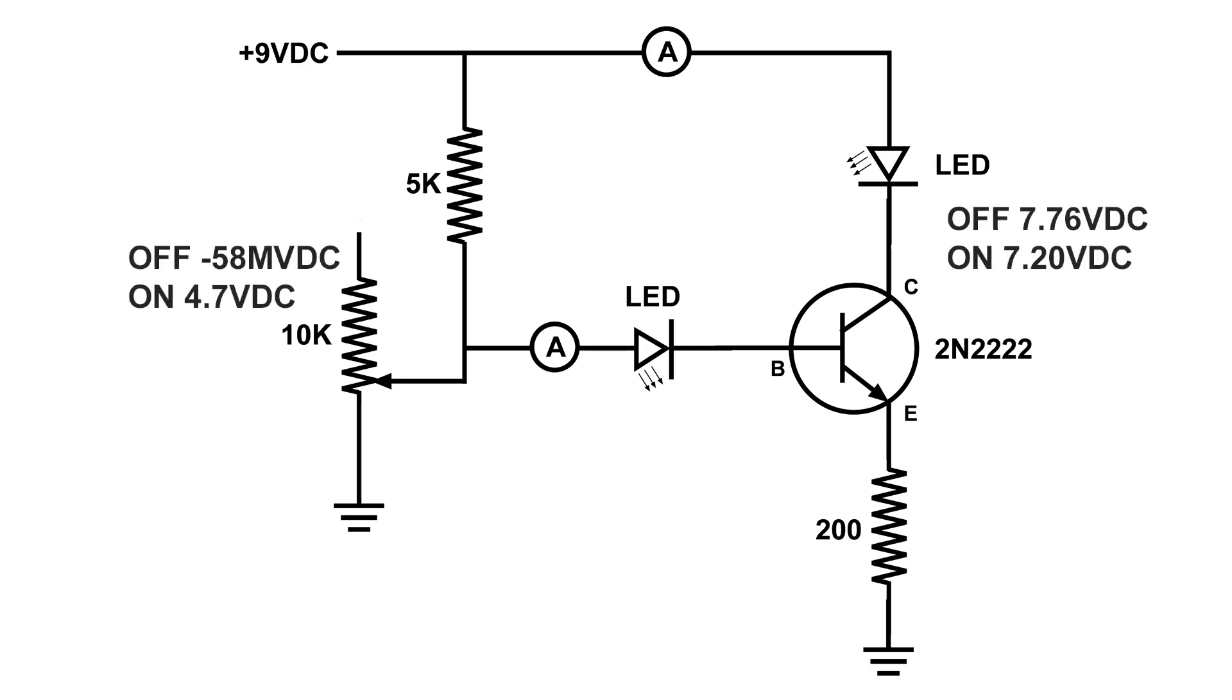All the way to the left, I found out that we had about a minus 58 millivolts. In other words, it's zero. And when the LED was off in the collector circuit, we had 7.76 volts DC.